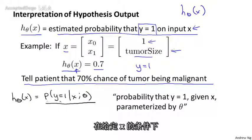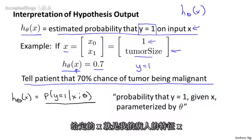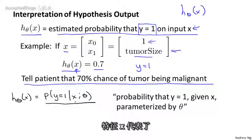This is the probability that y is equal to 1, given x, given that my patient has features x, or given my patient has a particular tumor size represented by my features x. And this probability is parameterized by theta. So I'm basically going to count on my hypothesis to give me estimates of the probability that y is equal to 1.